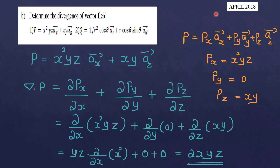Determine the divergence of the field. First one: P is equal to x squared yz x-vector plus xyz y-vector. The divergence of P equals... now in standard format P is equal to Px x-vector plus Py ay-vector plus Pz z-vector.